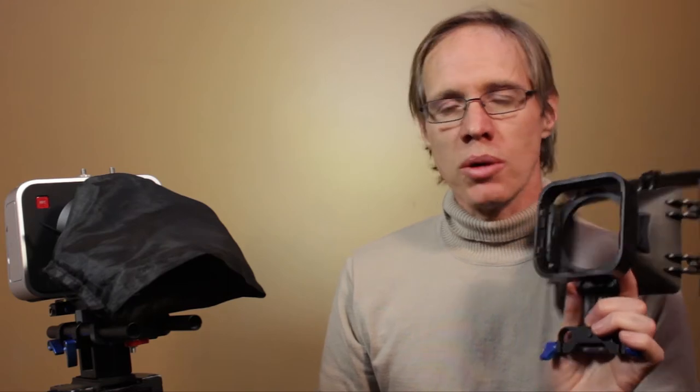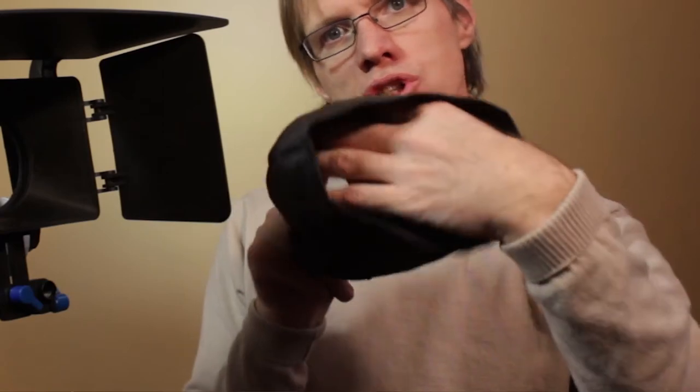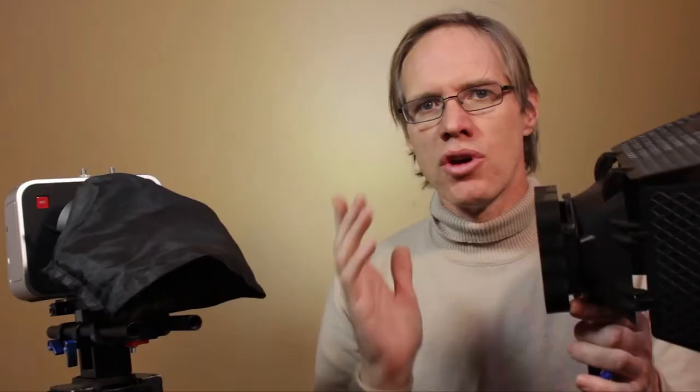So basically what I'm saying is this matte box needs knickers. Yep, you heard me right - I'm talking about nun's knickers. Now what a nun's knicker is, is a cylinder of material that would go over here and over your lens and cut that extra light leak out.